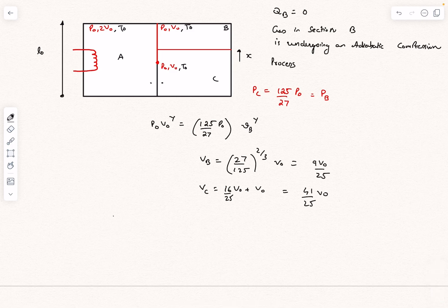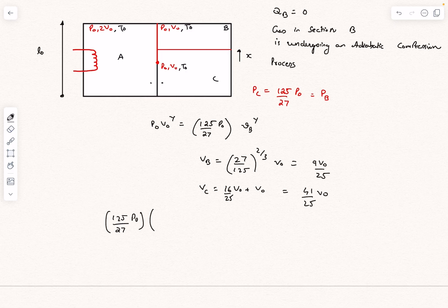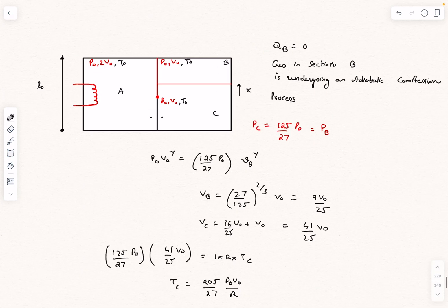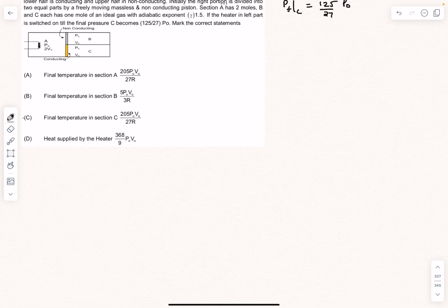By using ideal gas equation, PC multiplied by VC, I can write it as the number of moles into R into TC. This comes out to be 205 divided by 27 P₀V₀ by R. So that is option C.